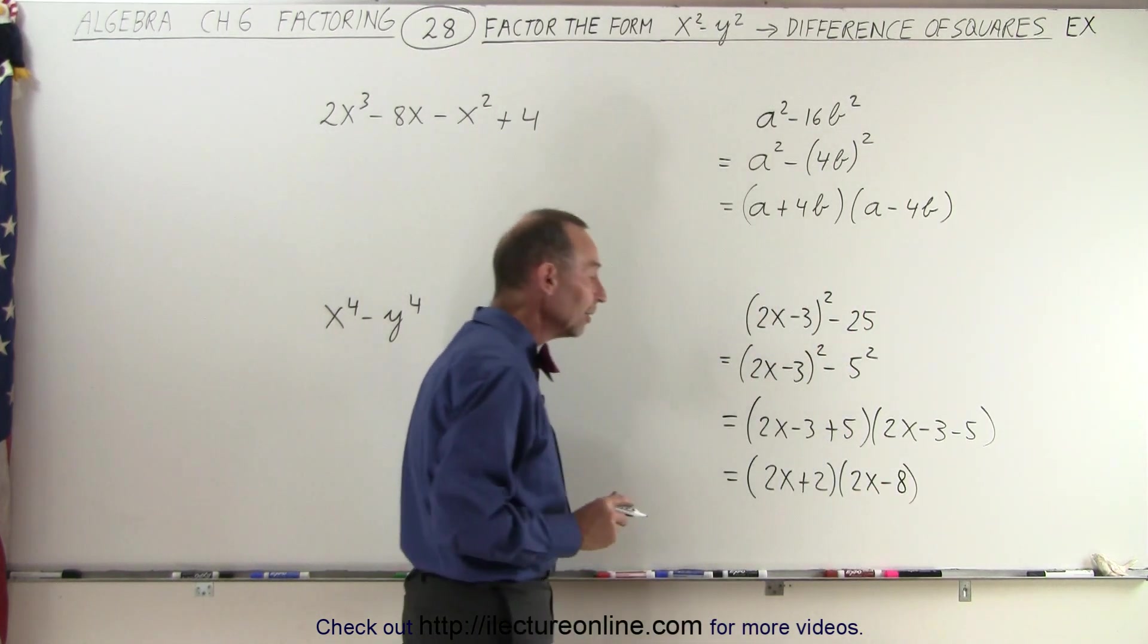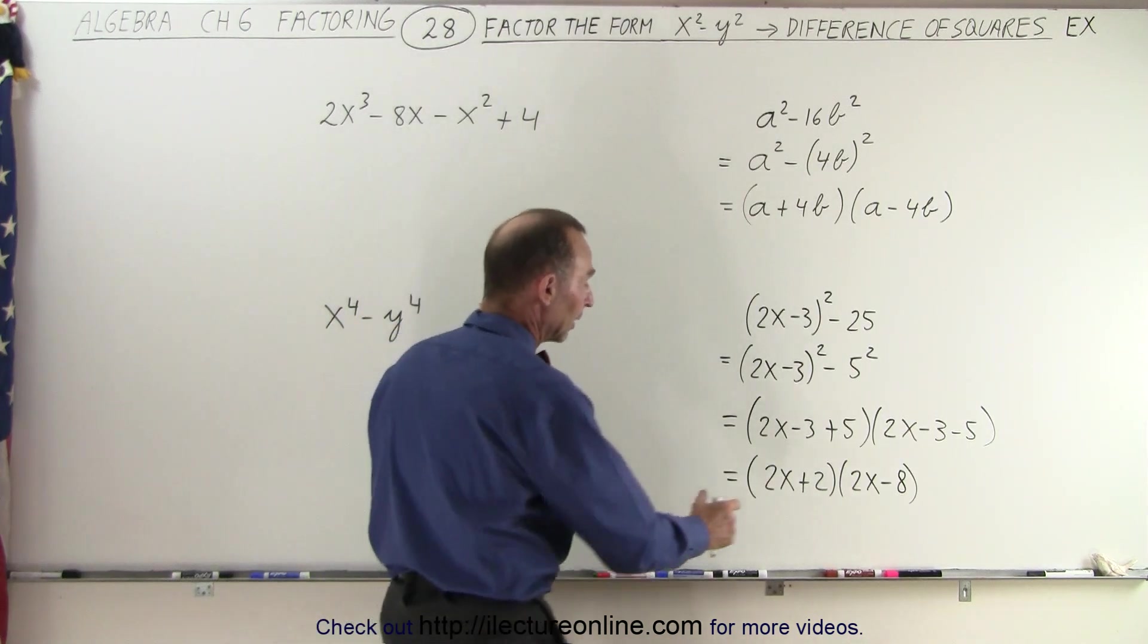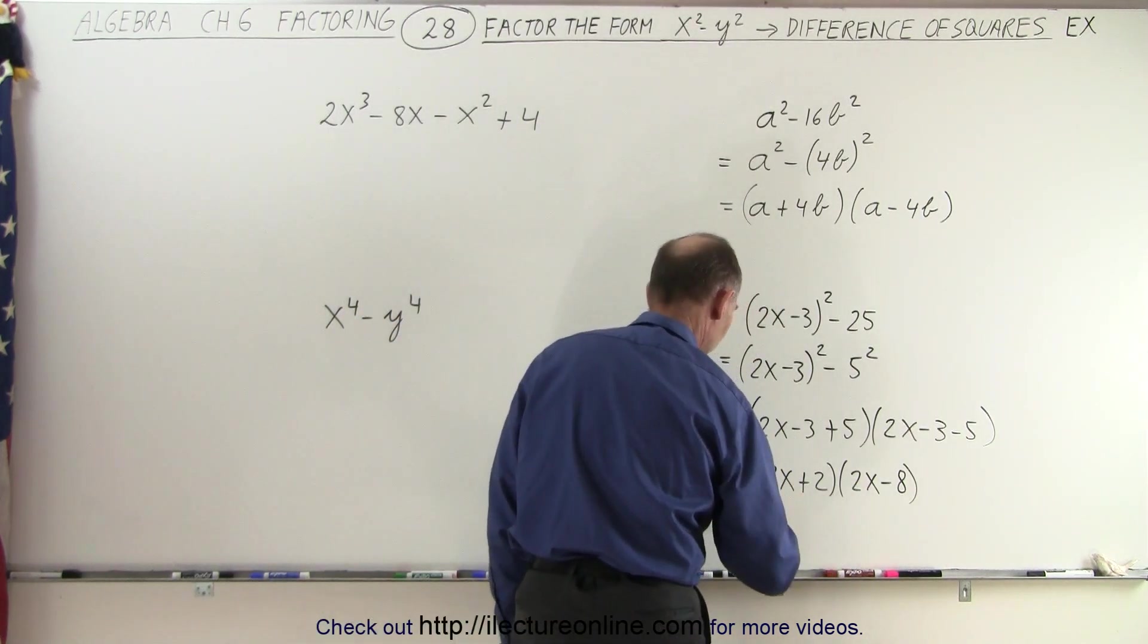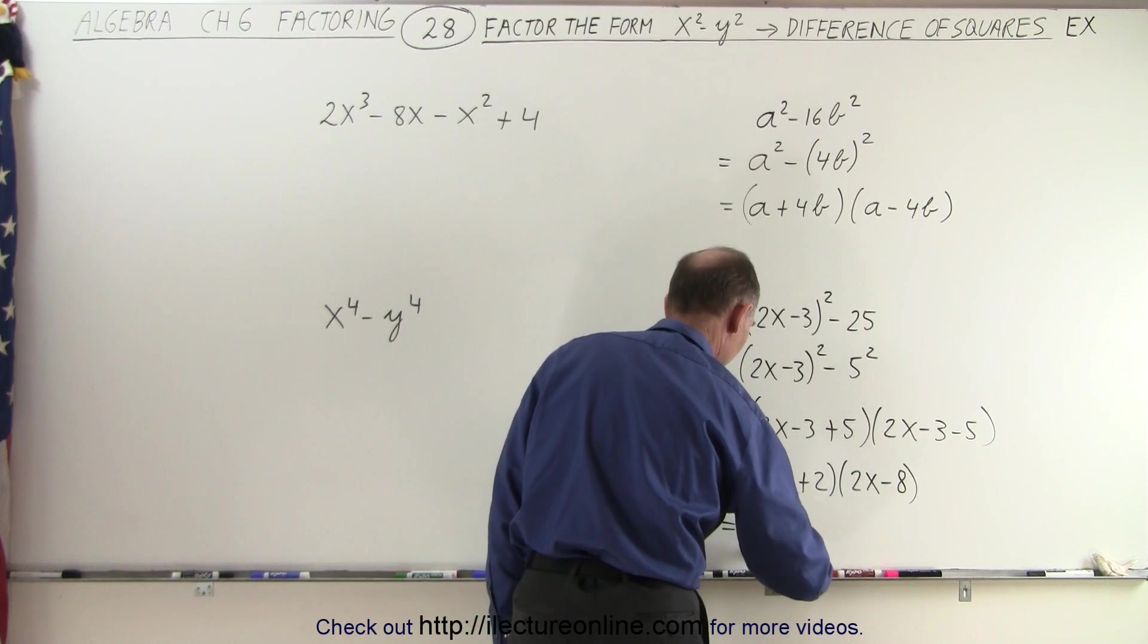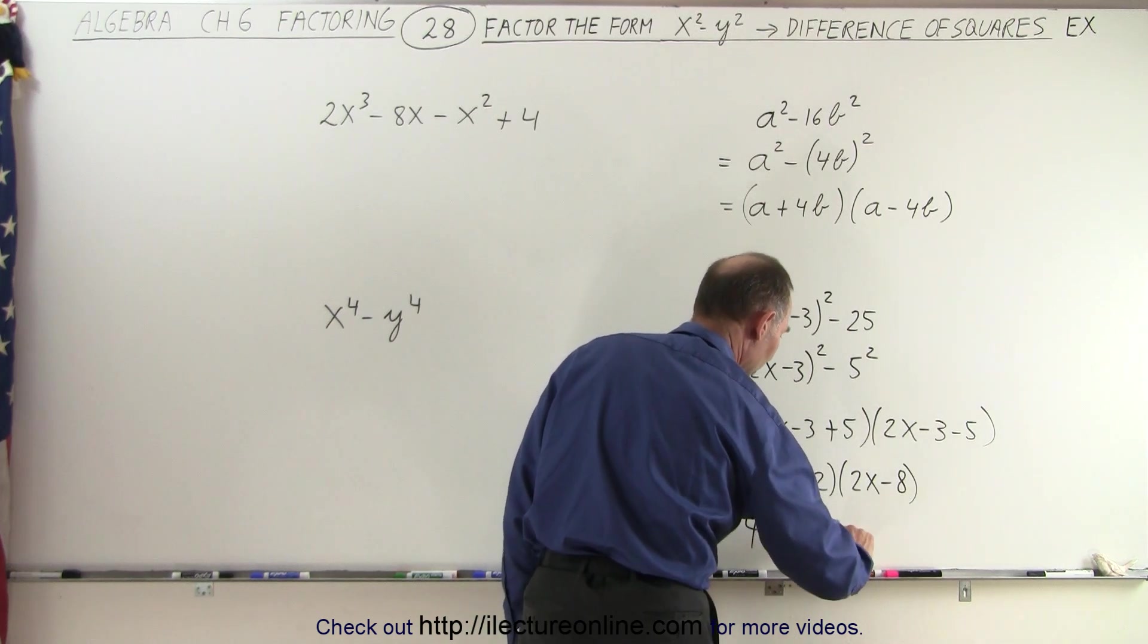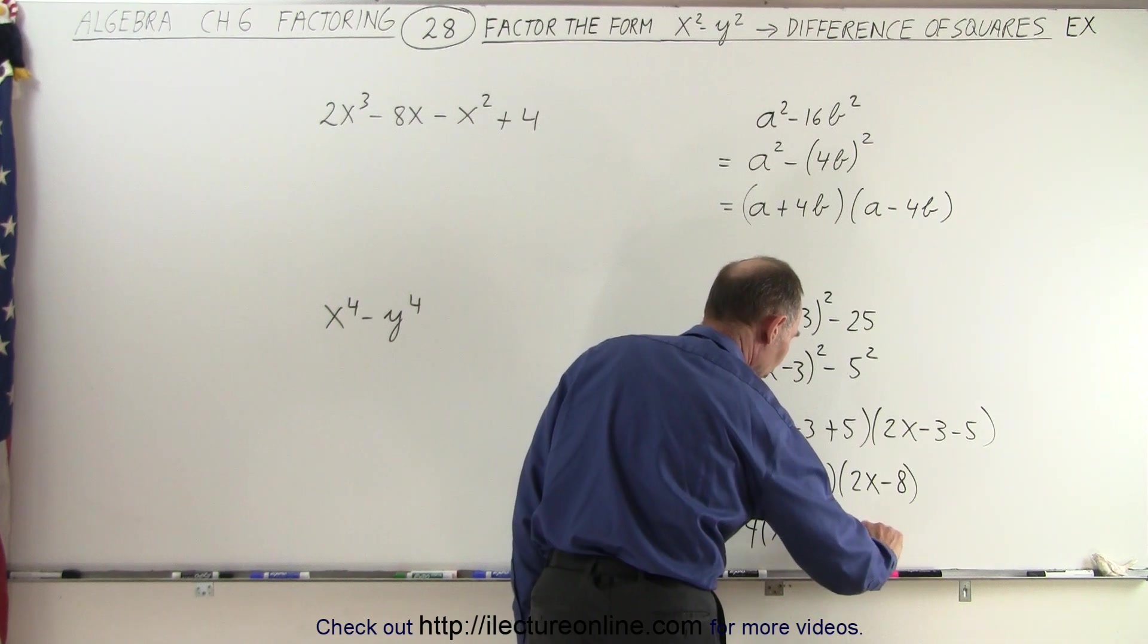There we go. And then you realize you can factor out a 2 from here and from here, so this is 2 times 2 or 4 times x plus 1 times x minus 4.